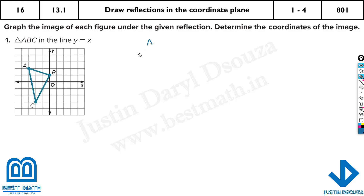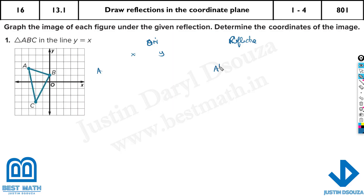A has x and y coordinates. I'll write a column for original and a column for reflected. I'll take point A — when it's reflected it will become A prime or A dash, because that is the newly formed image.